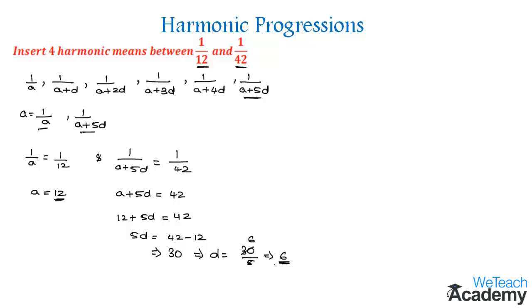Now let us find the four harmonic means. The first term is already 1/12. For the second term, 1/(a+d), substituting a = 12 and d = 6 gives 1/(12+6) = 1/18.